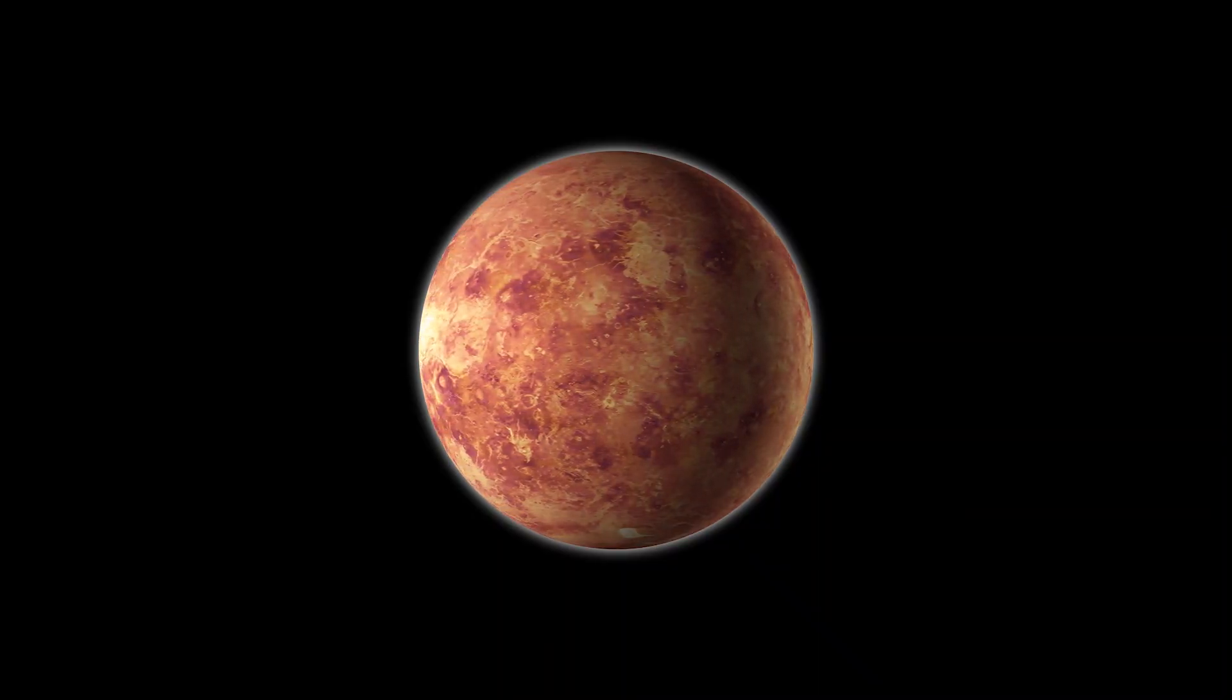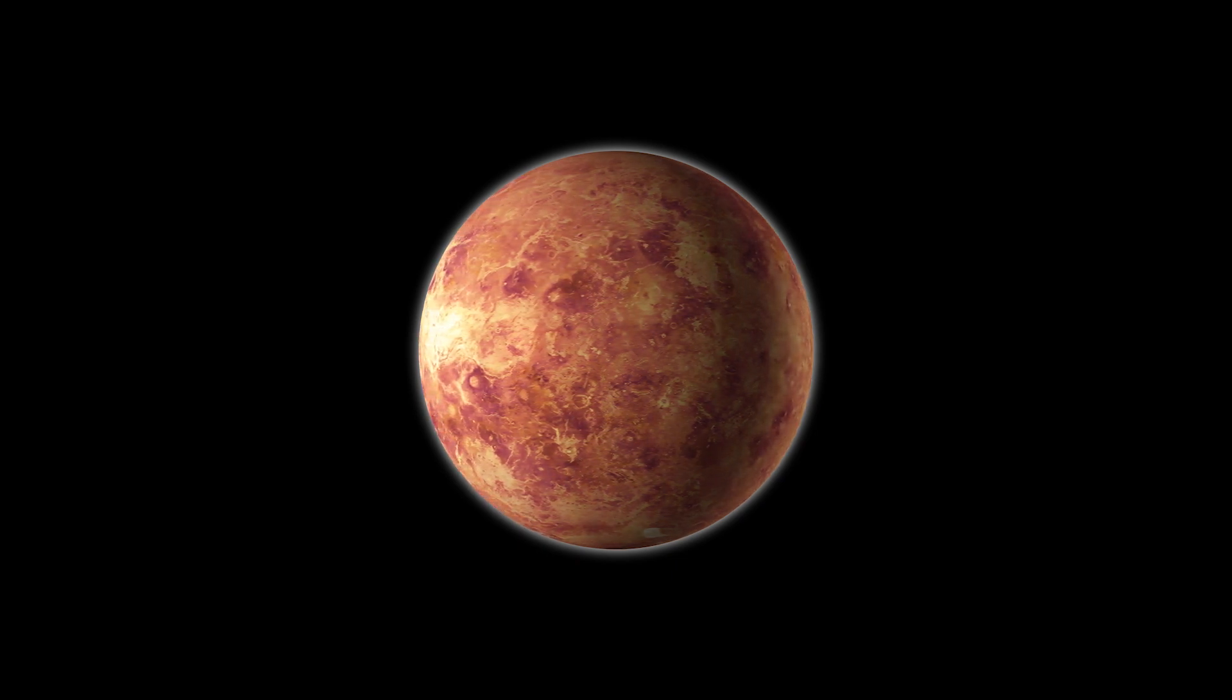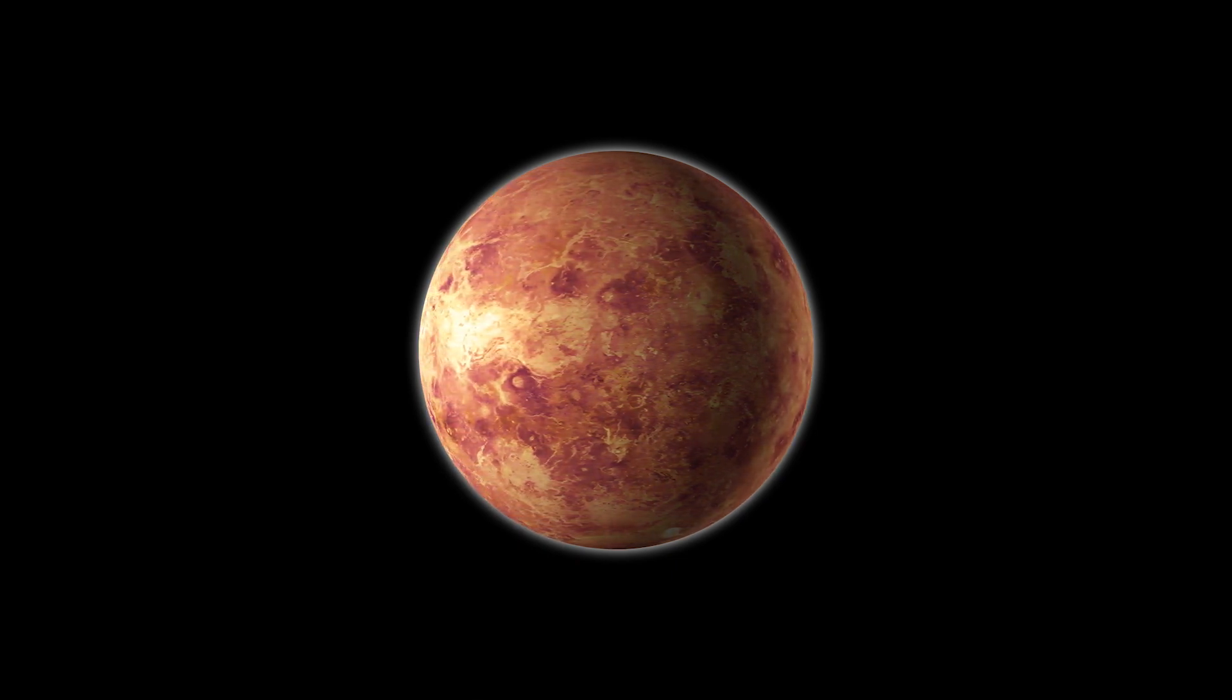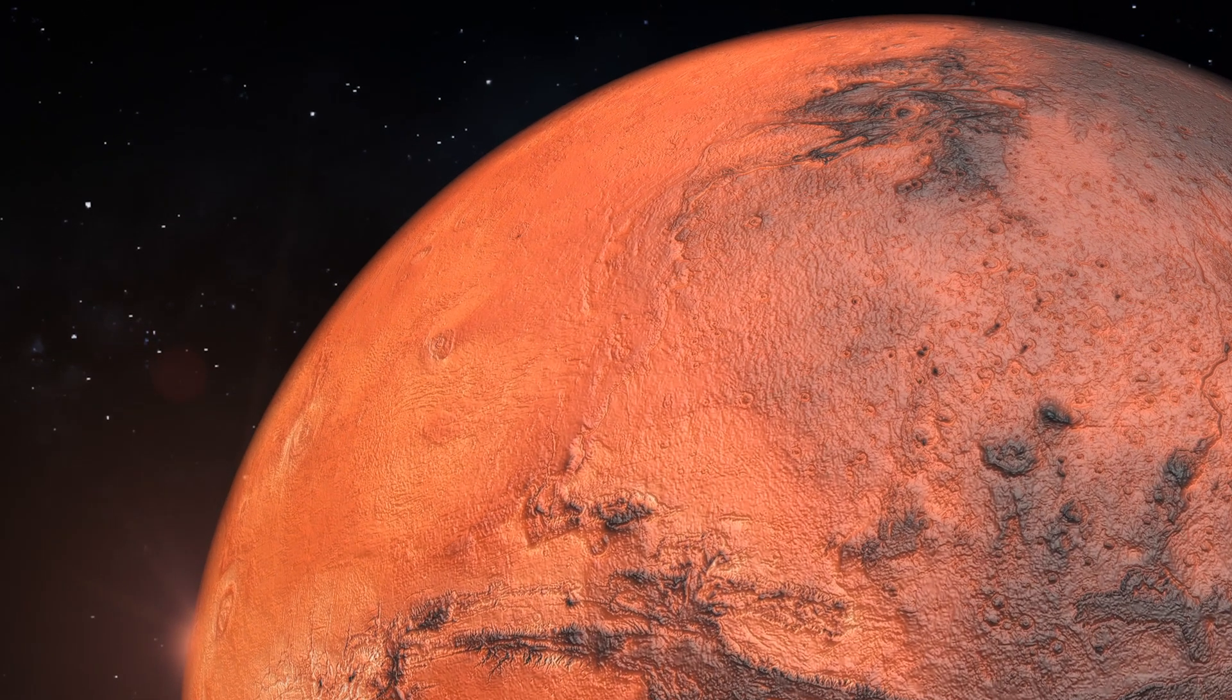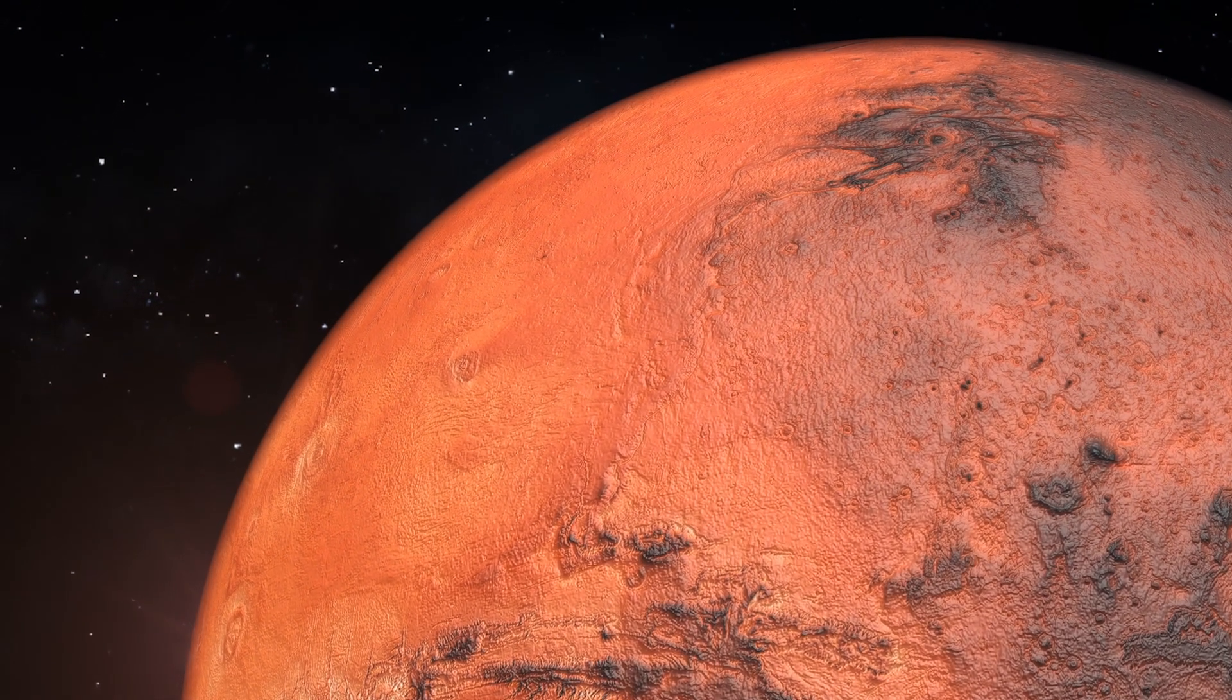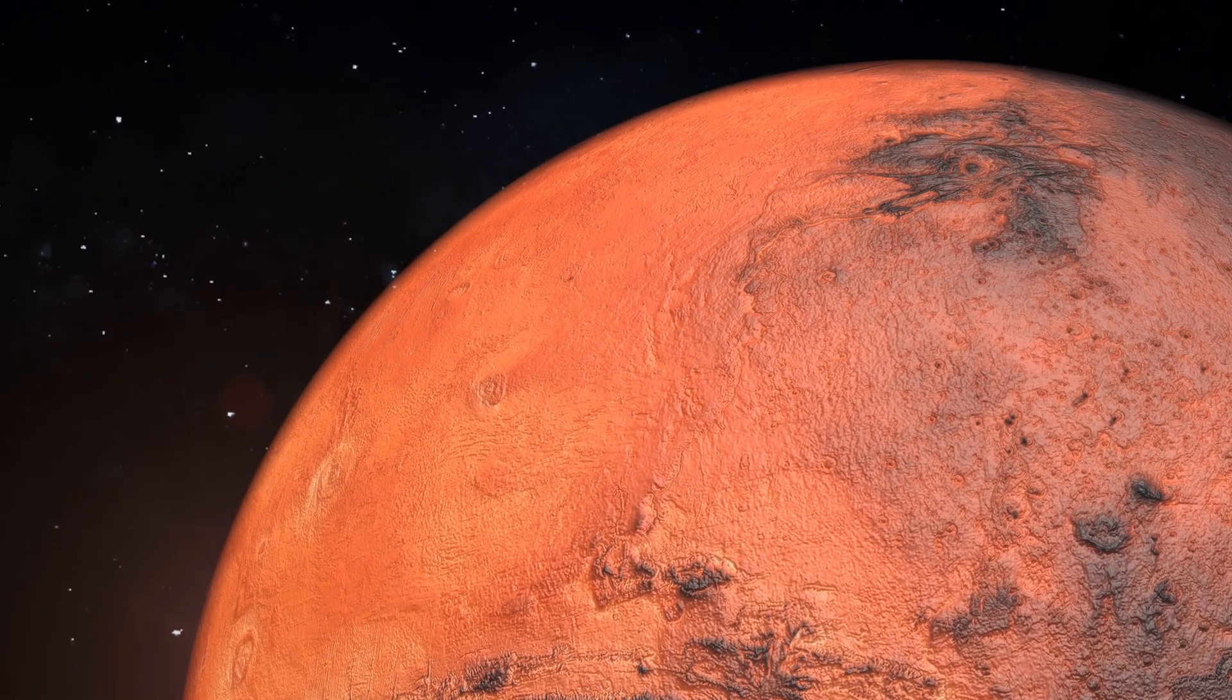A day on Mars, known as a Sol, lasts about 24.6 hours, just slightly longer than an Earth day. This similarity has made Mars an intriguing candidate for future human colonization.